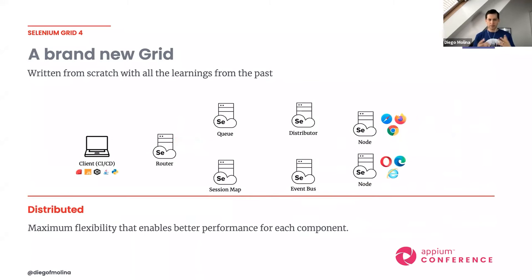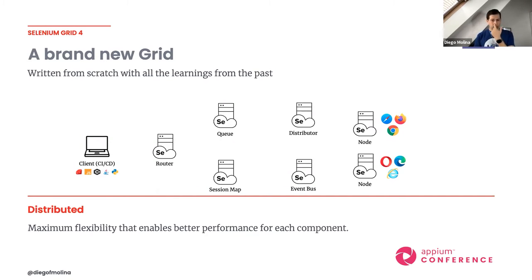Now let's go a bit deeper. You can also run the new grid in a fully distributed mode, where each component runs independently. This is extremely useful if you want to scale up to 200 or 300 nodes. We have a router as the entry point, a queue, a session map, and a distributor. The queue and session map are designed so that in the future you can plug in different storage backends — for example, Redis — enabling further scaling.